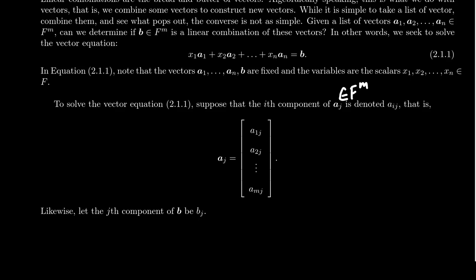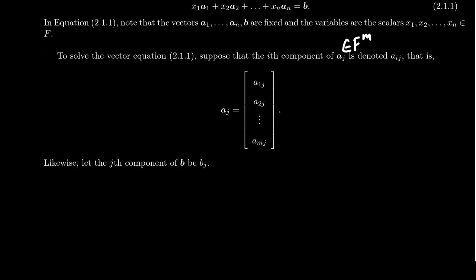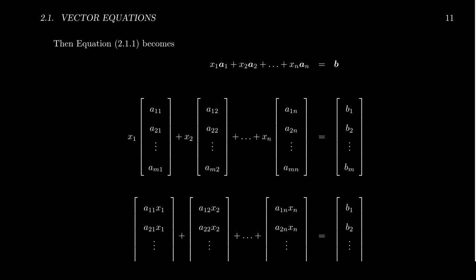So our vectors aj, we're going to say that these aj vectors belong to the vector space fm. m is the number of components there. Now, the reason is because I don't claim that the number of entries in the vectors is the same as the number of vectors we have. Those could potentially be different. So aj has m many elements in it. And likewise, the vector b will be a vector in fm, and we'll call its entries just bj, generically speaking. So with that sort of notation, I'm interested to express the entries of these vectors. We see the following type of situation. Vector equation x1 times a1 plus x2 times a2, all the way up to xn times an is equal to b.